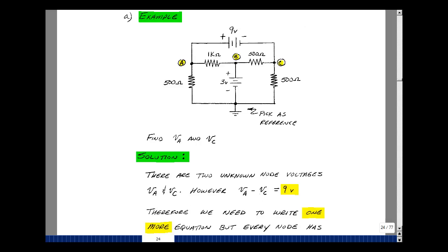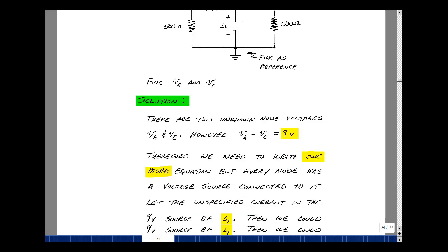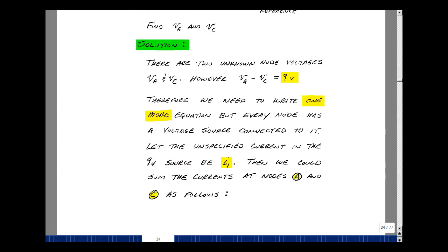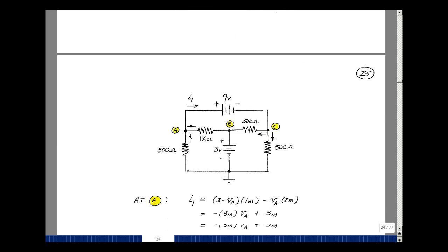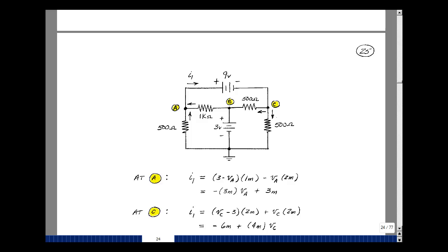What I'm going to have to do is assign a current in one or both of my voltage sources and then solve for that as an additional unknown. Pick the current in the 9-volt source, and I'm going to call that I1, and it's labeled on the following page. Besides the unknown node voltages A and C, I now have an unknown current I1.